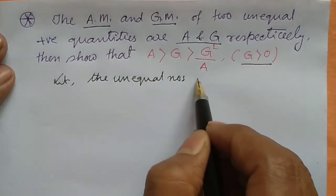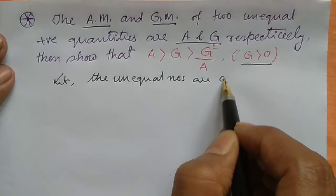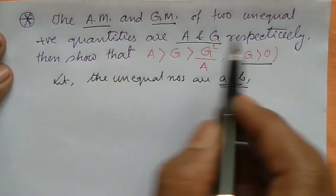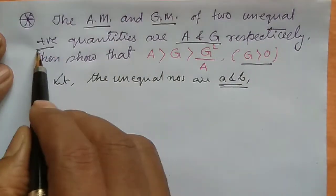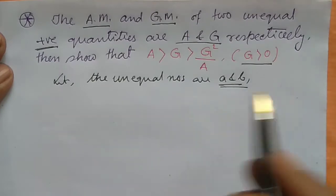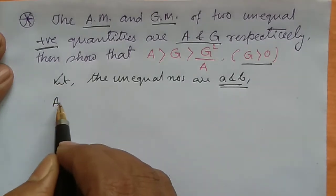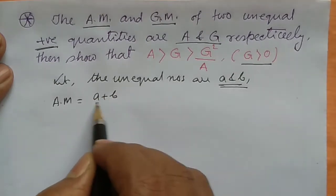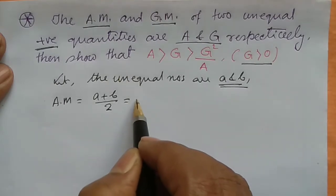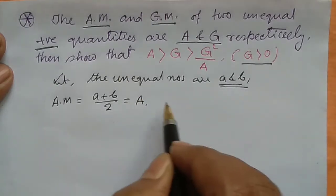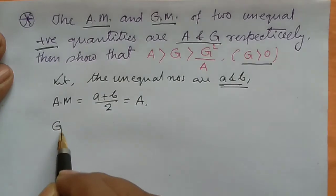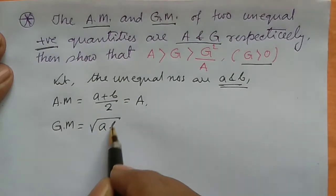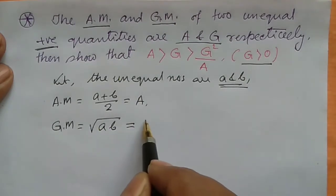Let us consider two unequal positive quantities a and b. Then the arithmetic mean AM = (a + b)/2, which we denote as A, and the geometric mean GM = √(ab), which we denote as G.